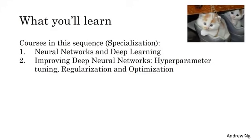Like momentum, RMS prop, and the Adam optimization algorithm. Sometimes it seems like there's a lot of tuning, even some black magic, in how you build a neural network. So the second course, which is just three weeks, will demystify some of that black magic.